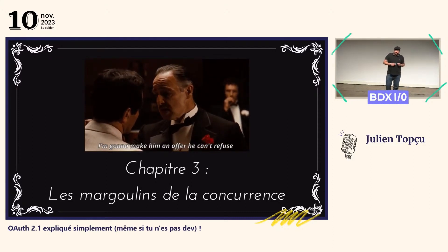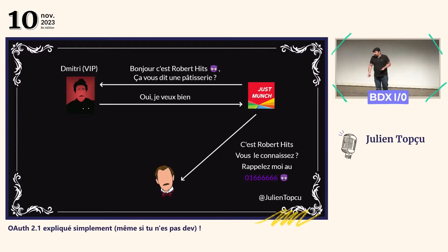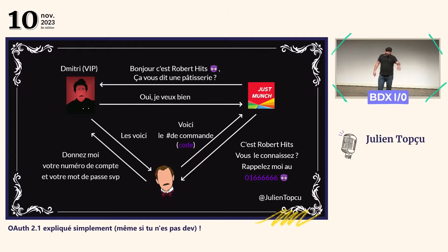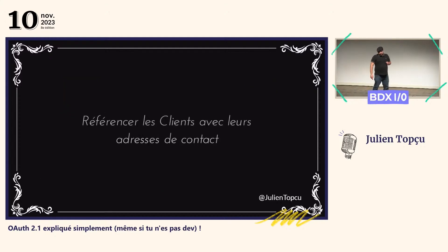Les concurrents de Robert Ritz étaient très frustrés parce qu'ils savent qu'ils peuvent se faire plein d'argent avec nos pâtisseries. On a un concurrent malveillant qui s'appelle JustMunch. Ils se font passer pour Robert Ritz en disant : « Rappelle-moi à ce numéro. » Mais Gustave n'a aucun moyen de savoir que ce n'est pas réellement Robert Ritz en face. Donc il y a tout le process qui est fait, Dimitri est autorisé, et puis Gustave rappelle JustMunch au numéro spécifié en donnant le numéro de commande. Ils ont intercepté cet authorization code et c'est comme ça qu'ils ont été en mesure d'aller chercher des pâtisseries soi-disant pour nous.